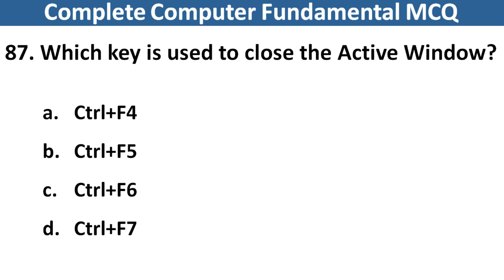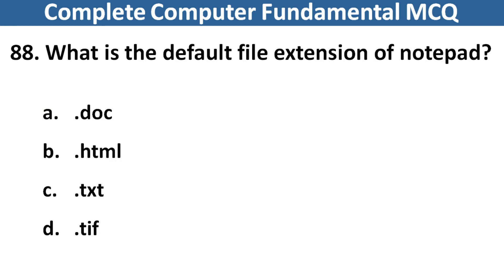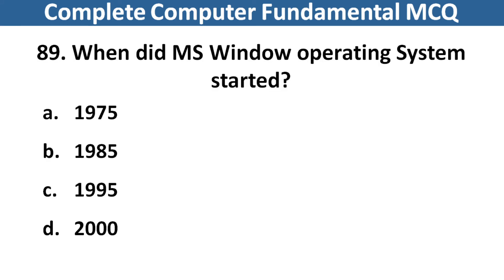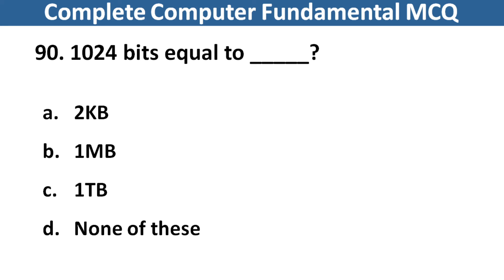Which key is used to close the active window? Right answer is option A, Control plus F4. Next question: What is the default file extension of Notepad? Right answer is option C, .txt. Next question: When did MS Windows operating system start? Right answer is option B, 1985. Next question: 1024 bits equal to dash dash. Right answer is option D, None of these.